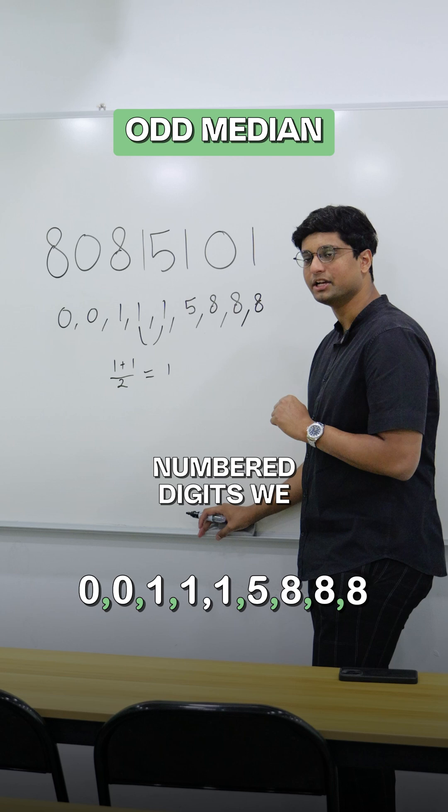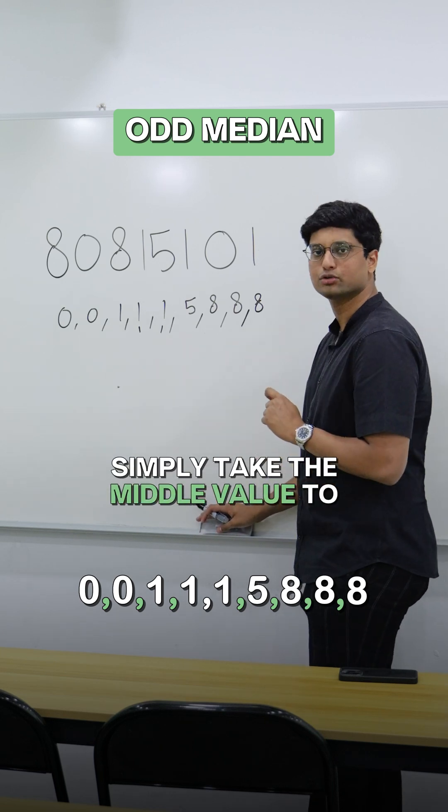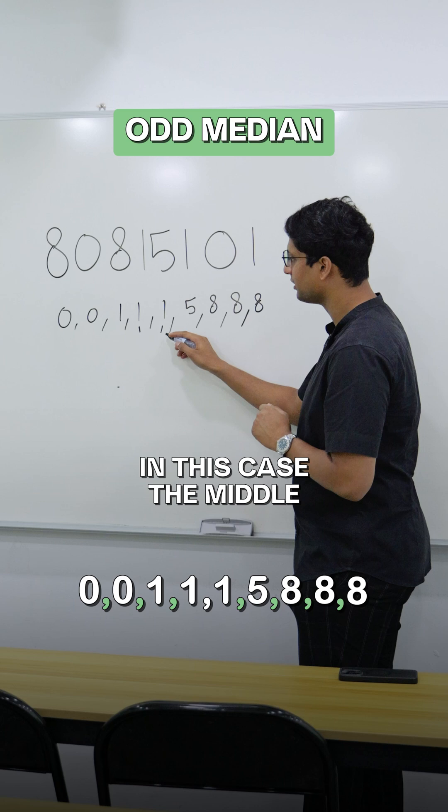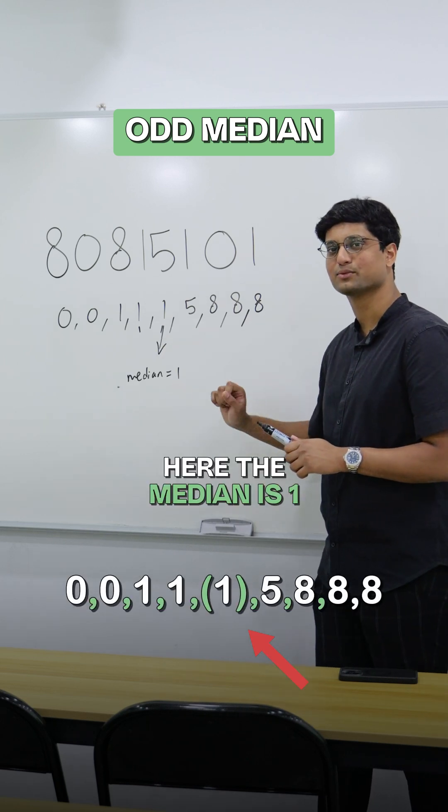Now since we have odd numbered digits, we simply take the middle value to be the median. In this case, the middle value will be this. So the median is 1.